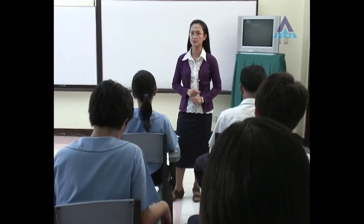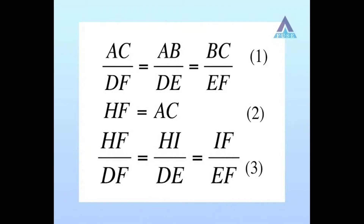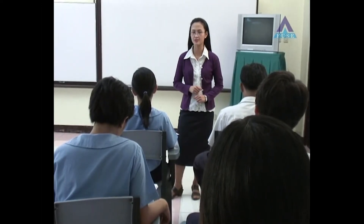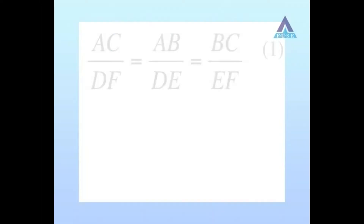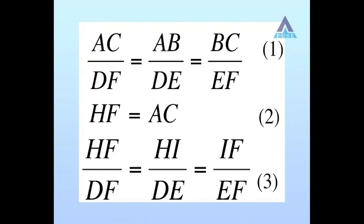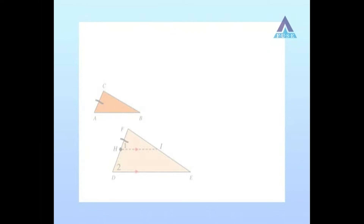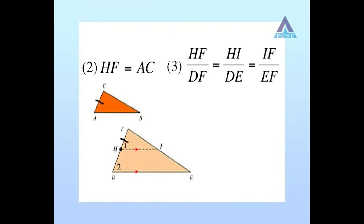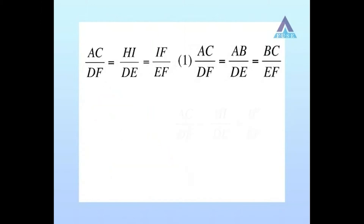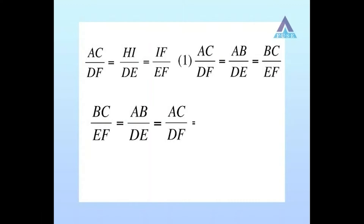There are no examined equations that we have. Any suggestion as to how these equations can be used in our proof? I will use equation 2 to rewrite equation 3. Substitute HF to AC to get AC over DF equals HI over DE equals IF over DF. With this new equation substituted into equation 1, we obtain BC over EF equals AB over DE equals AC over DF equals HI over DE equals IF over DF.